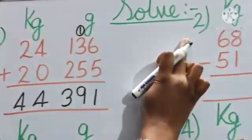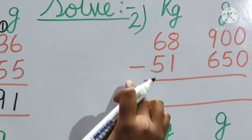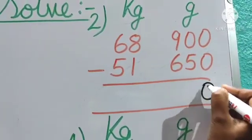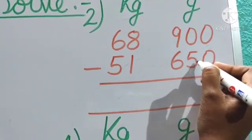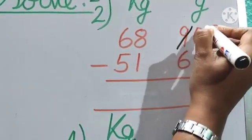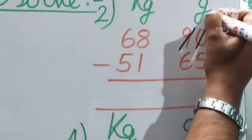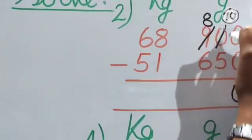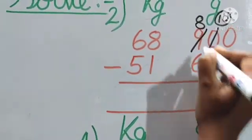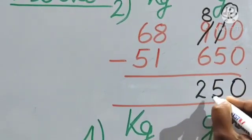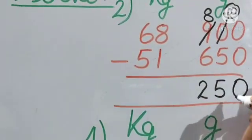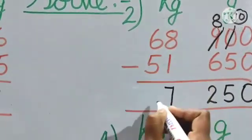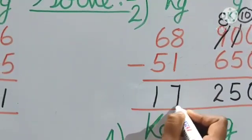Now number 2. What is given? Subtraction. So let us do the subtraction. 0 minus 0, we will get 0. 0 minus 5, can we do it? No. So borrow 1 from 9, and this one became now 10, and 9 became now 8. So 10 minus 5, 5. 8 minus 6, 2. So 250. Now here, 8 minus 1, 7 and 6 minus 5, 1. So 17 kg, 250 gram.